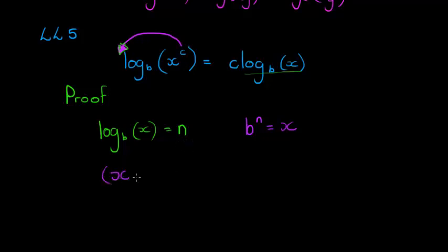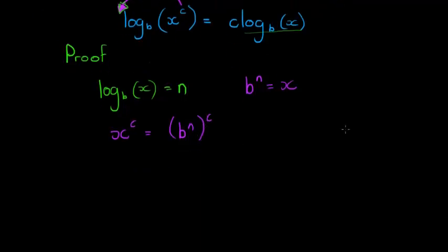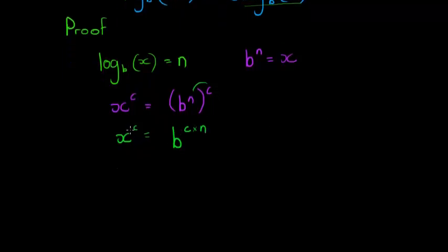If I take x to the power of c, remember x equals b to the power of n. So x to the power of c becomes (b to the power of n) to the power of c. Applying our exponential laws — when we have a power raised to an exponent, the two exponents multiply — this becomes b to the power of c times n.